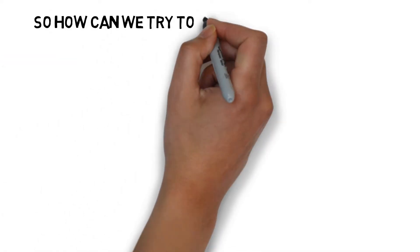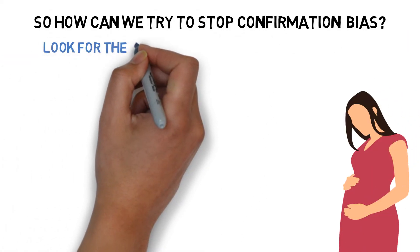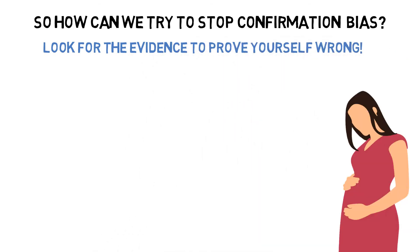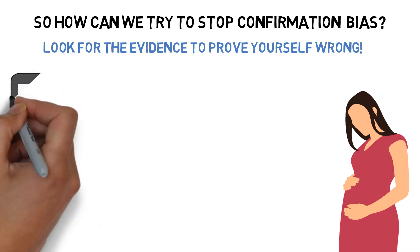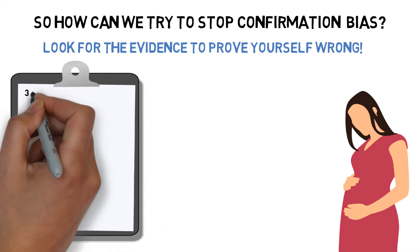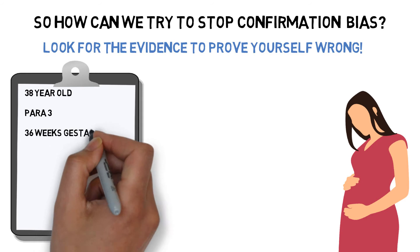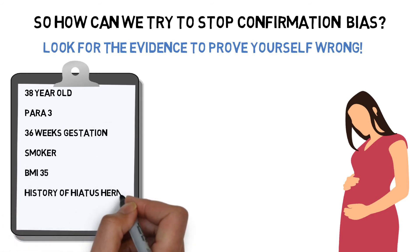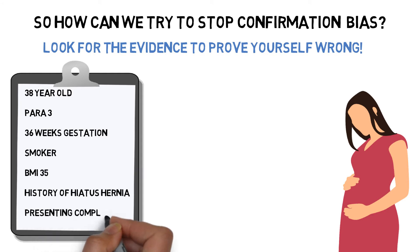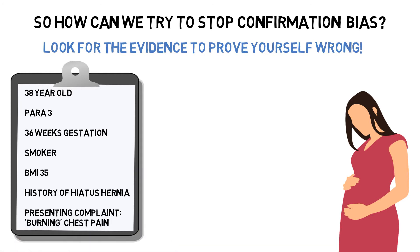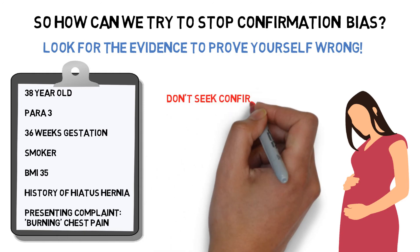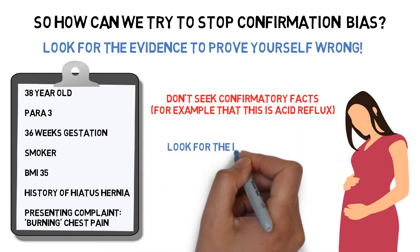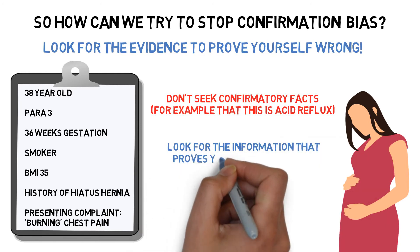So, how can we try to stop confirmation bias? We need to look for the evidence to prove ourselves wrong. A 38 year old, para 3, at 36 weeks gestation presents to maternity triage with burning chest pain. She is a smoker with a BMI of 35 and has a history of hiatus hernia. Instead of seeking confirmatory facts to confirm our diagnosis, in this case of acid reflux, we should look for the information that proves our answer wrong.